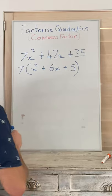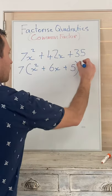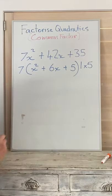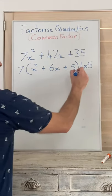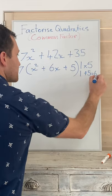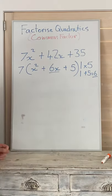The only two numbers that can get 5 are 1 and 5. Multiplied together will get you 5, and if you plus 1 plus 5 you will get 6, which is our middle term.